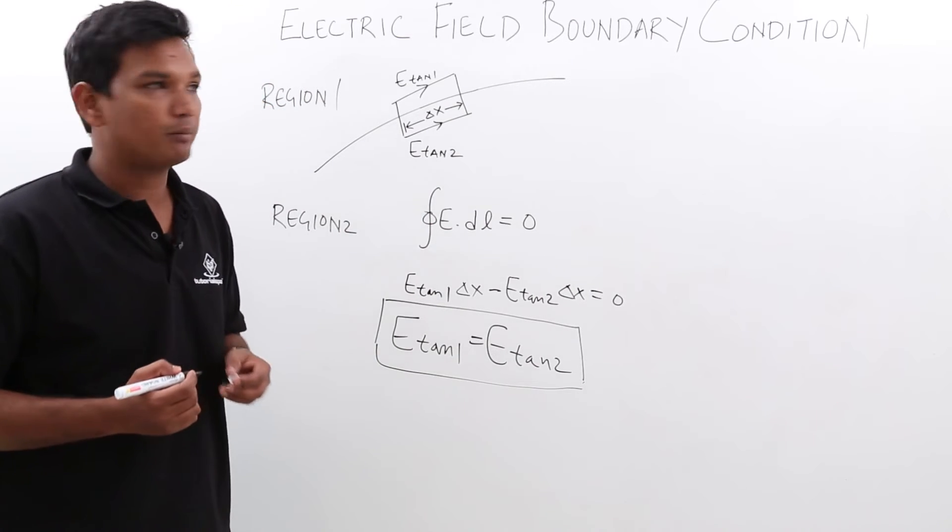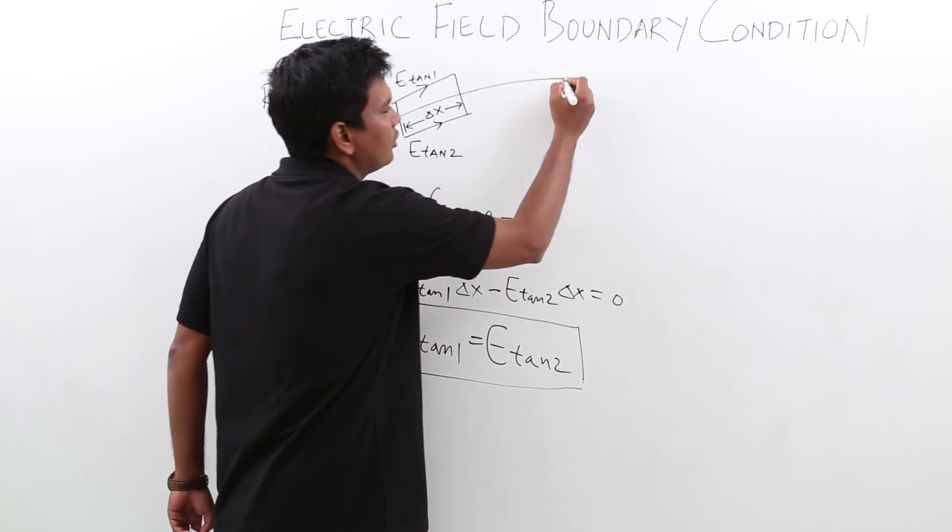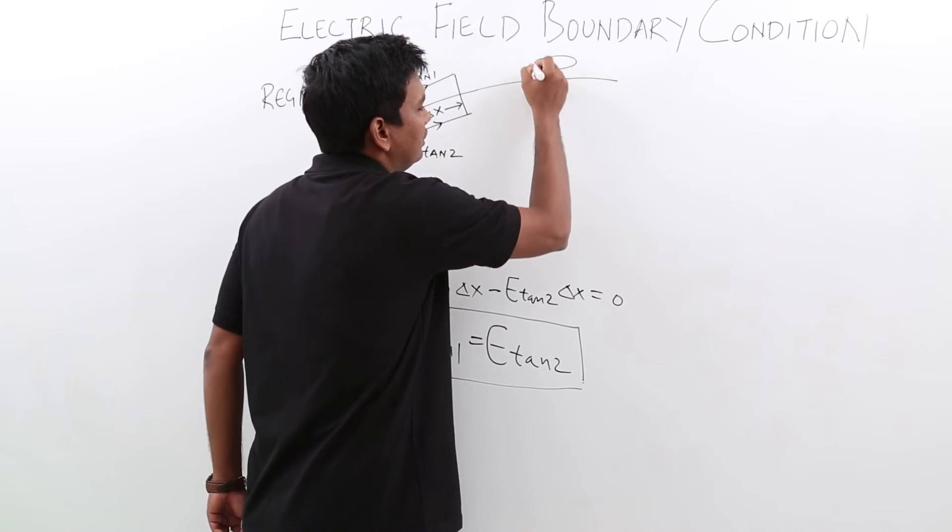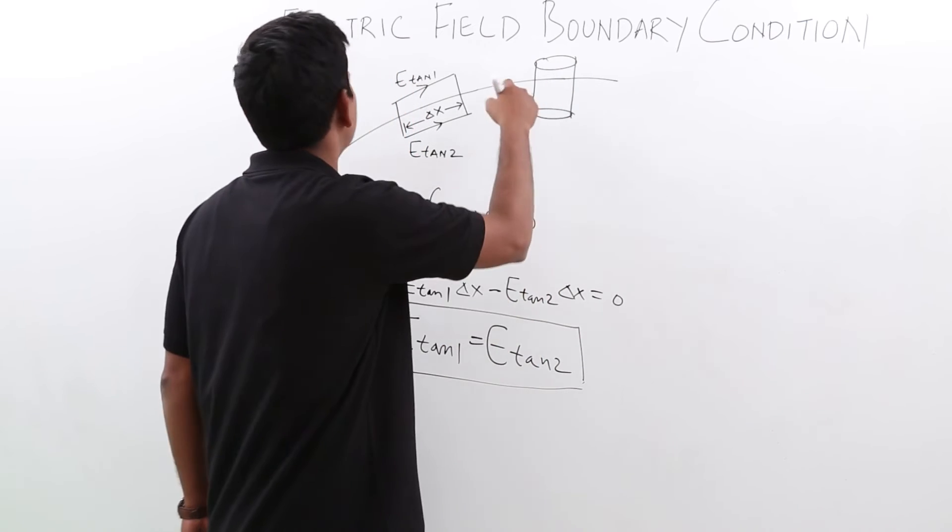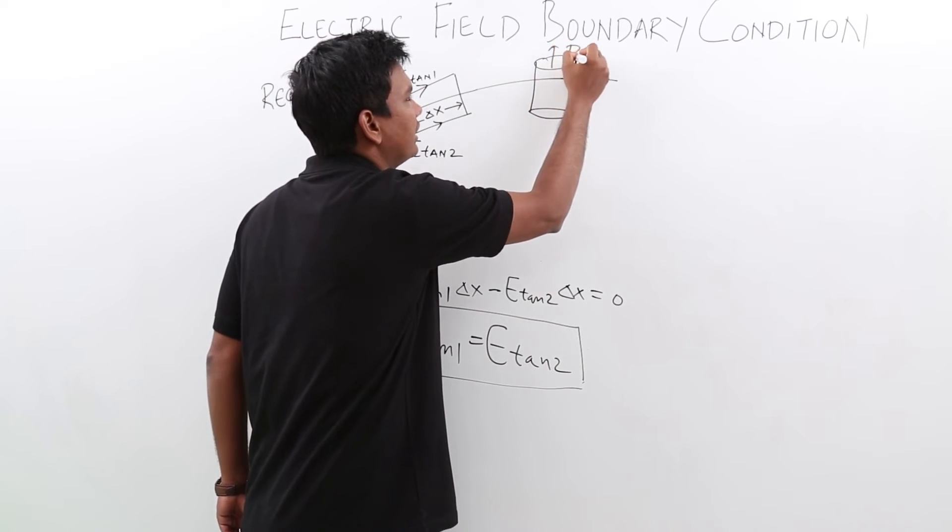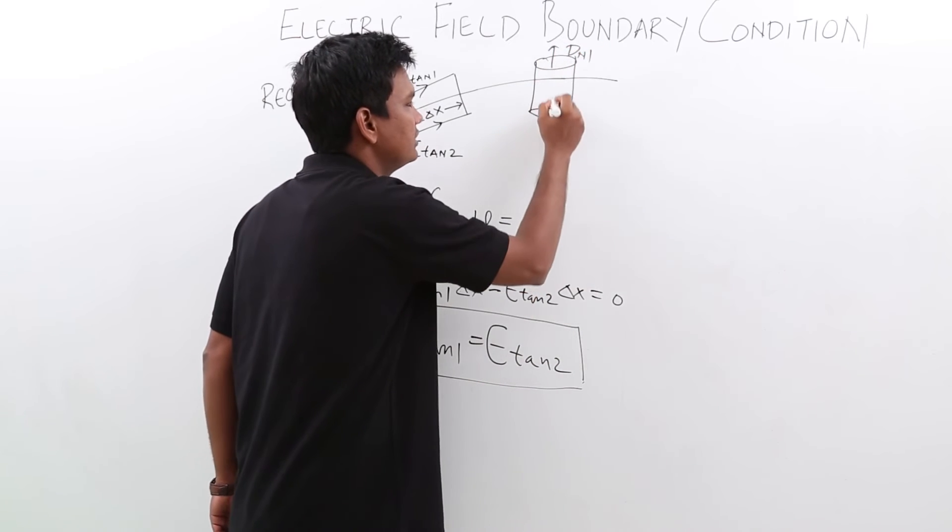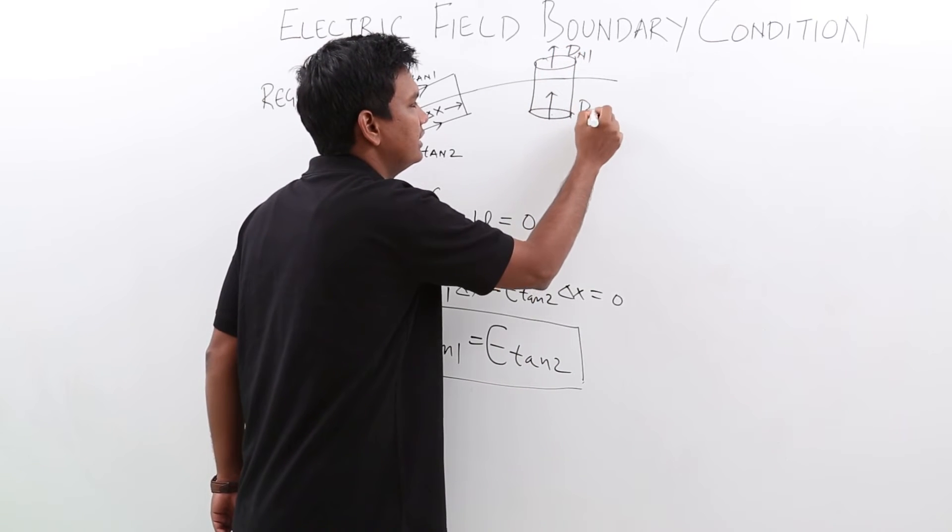Let us see about the normal component. How can we find the normal component? Let me draw this. Let us say for this region, the normal is d n 1. For this, let me call this d n 2.